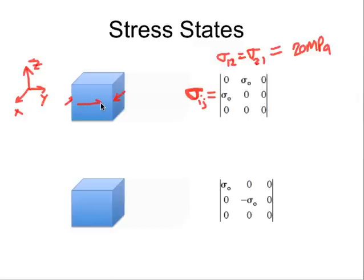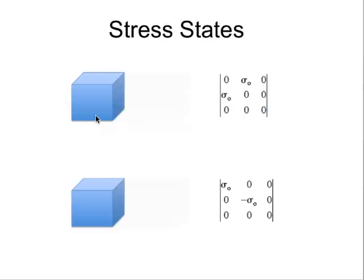And sigma_21 is going to be in the y direction on the positive x face, and there would have to be the corresponding one on the back. So that would be a particular set of applied stresses. We could also switch up the axes or define the axes in a different way. To describe this, let's pick a different set of axes. Let's pick x and y this way.